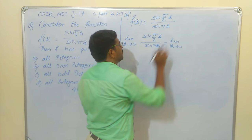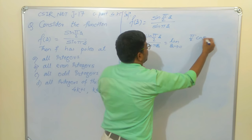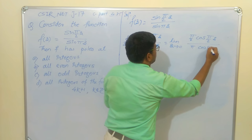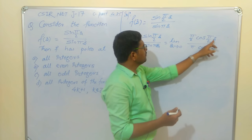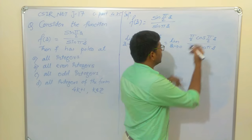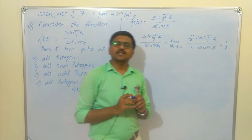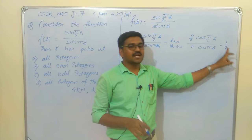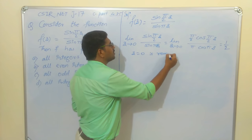Since we have a 0/0 form, we apply L'Hôpital's rule and take the derivative: (π/2)·cos(πz/2) / (π·cos(πz)). At z=0, cos(0)=1 in both numerator and denominator. So we get (π/2)/π = 1/2. The limit at z=0 exists and is finite.